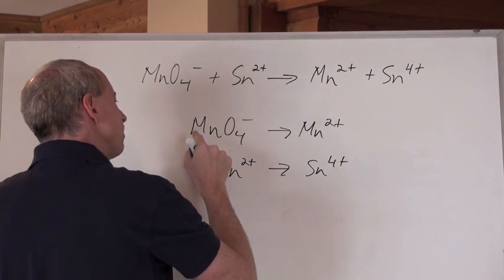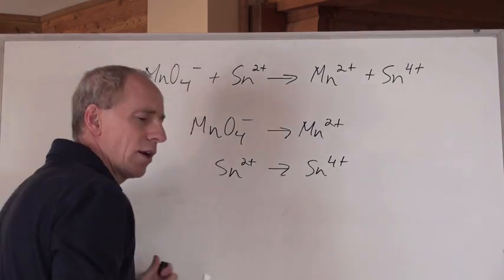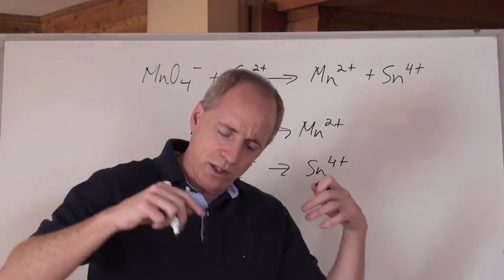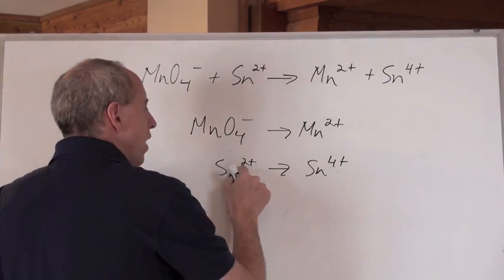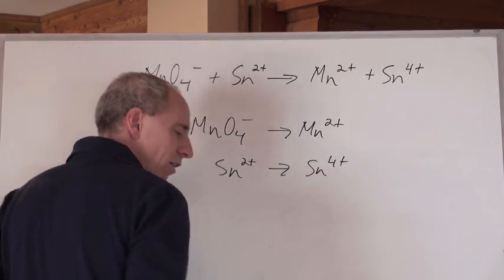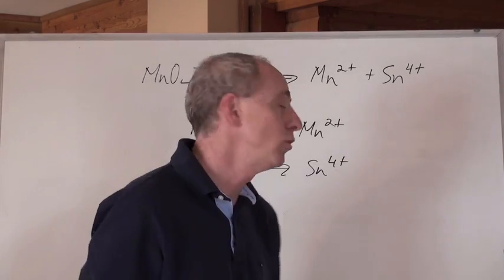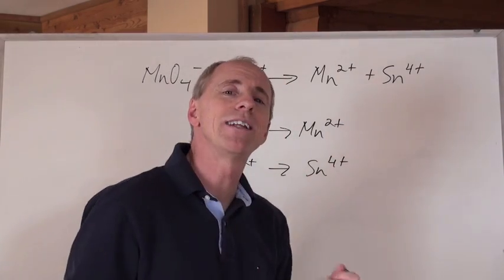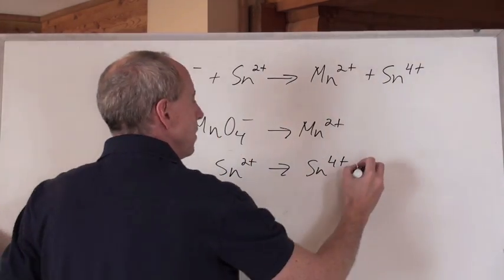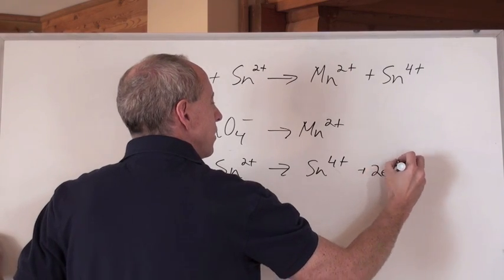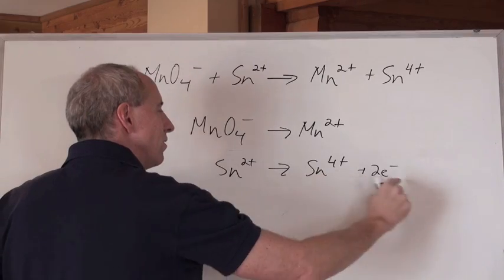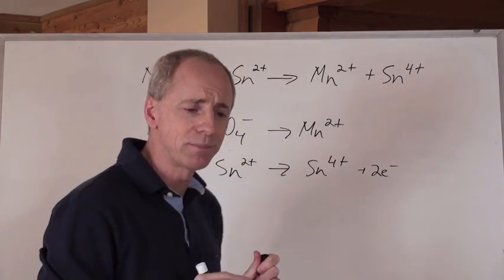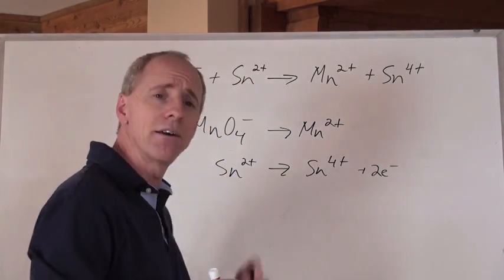Well, I can balance this half reaction right away. I don't need any oxygens, don't need any hydrogens, all I need to do is balance the charges. And if I've got two positives here and two electrons here, which side gets the electrons? It's going to be this side. Because two negatives and four positives makes two positives total. This is your oxidation half reaction, that's the reducing agent right there.